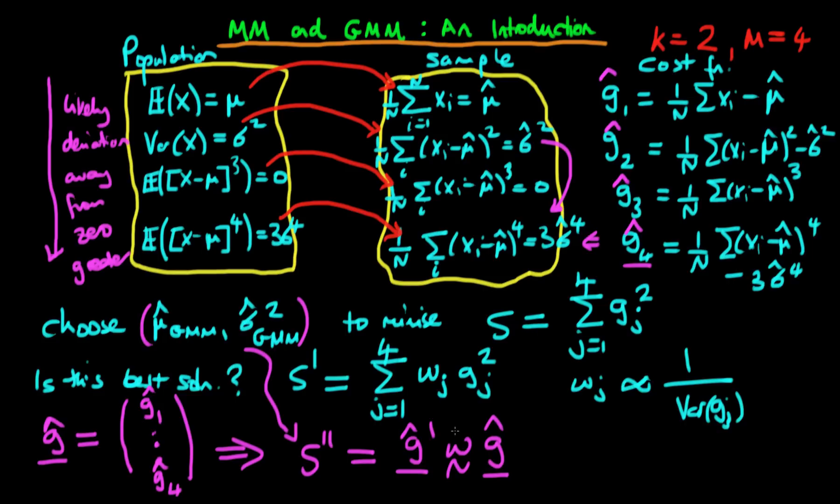The only thing that we have to think about now is how do we actually go ahead and estimate W. So I'm going to actually have W hat here for our matrix, because of course we don't actually know what is necessarily the covariance between these corresponding moment conditions. So that's going to be something that we're going to need to estimate in its own right.